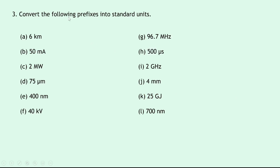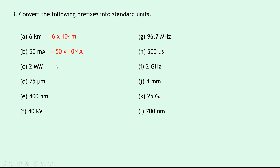Question three says to convert the following prefixes into standard units, so we need to know our prefixes to answer this. Part a: six kilometers — k means times 10 to the 3, so this becomes 6 times 10 to the 3 meters. Part b: 50 milliamps — to get that into amps we replace the small m with times 10 to the minus 3, so this becomes 50 times 10 to the minus 3 amps.